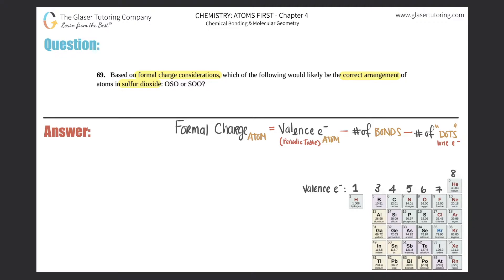Without even formal charges, we actually know which one of these is sulfur dioxide. Because we know something about what the central atom has to be in Lewis structures. In this case, it looks like they're portraying the sulfur to be the central atom. And in the other one, it looks like the oxygen is going to be the central atom.